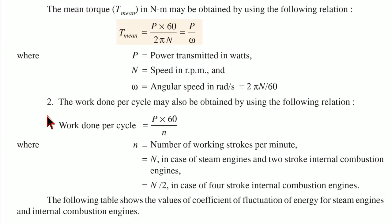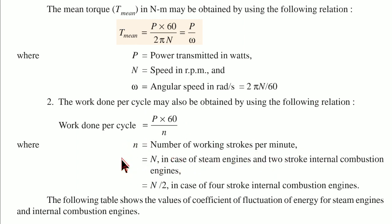Relation two: the work done per cycle may also be obtained by the relation: work done per cycle equals P multiplied by 60 divided by n, where n is the number of working strokes per minute. Here n equals N for steam engines and 2-stroke internal combustion engines, and n equals N divided by 2 for 4-stroke internal combustion engines.